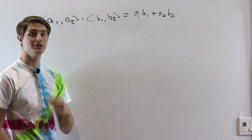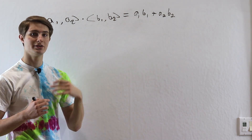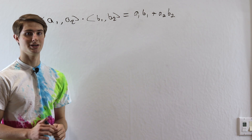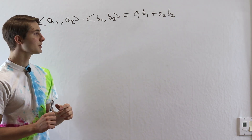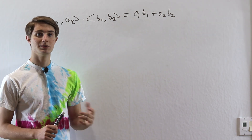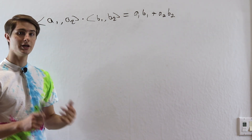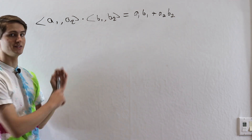Everything we're doing here is in two dimensions, but we can expand all these ideas to any number of dimensions that we want. Now we're going to prove a couple of properties of the dot product that will help us get an understanding of what exactly this is.